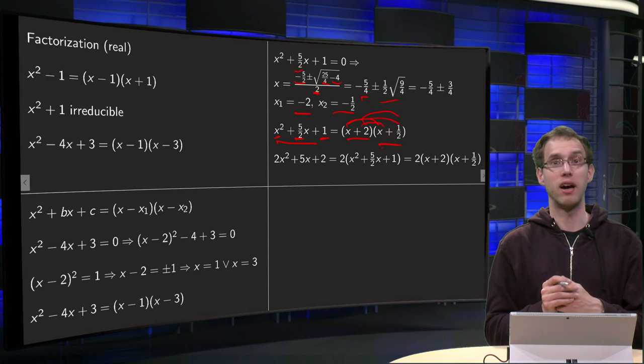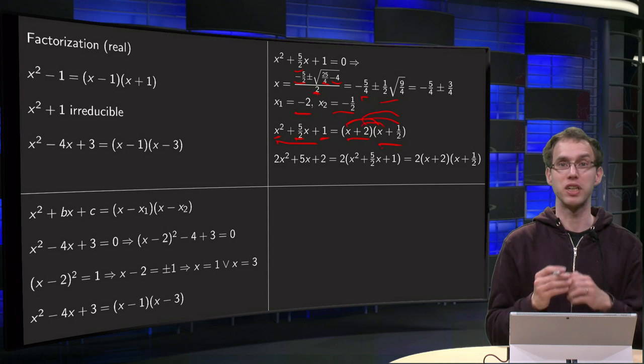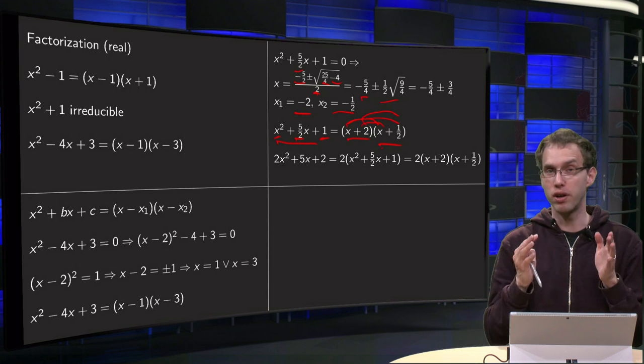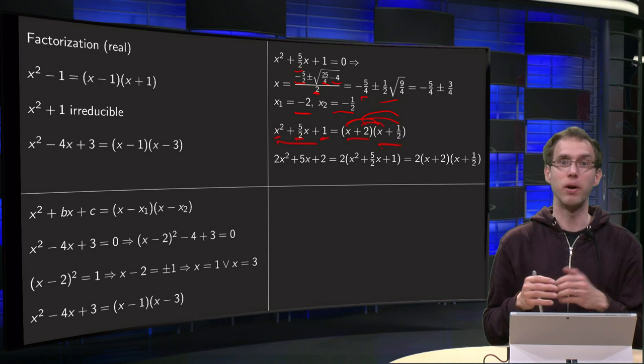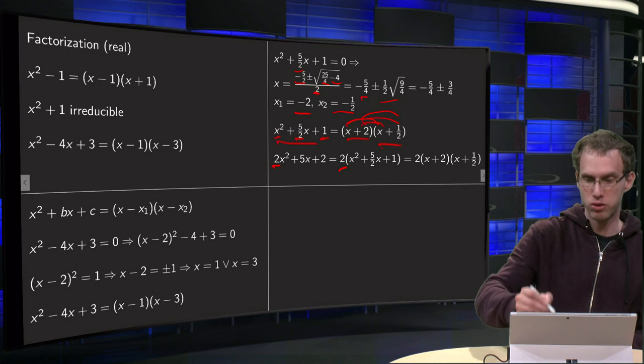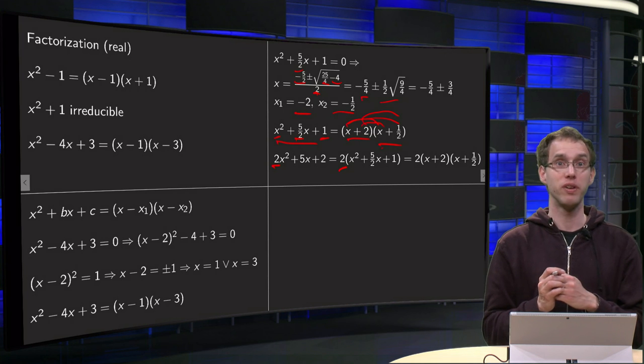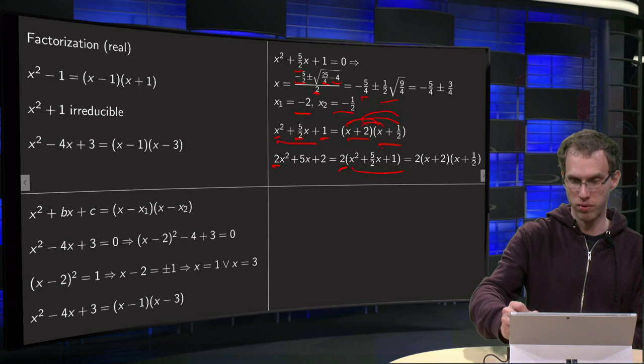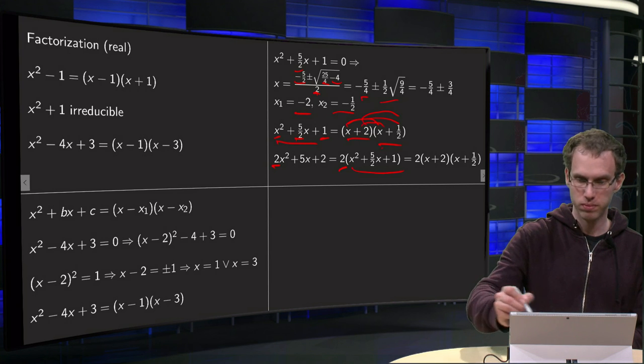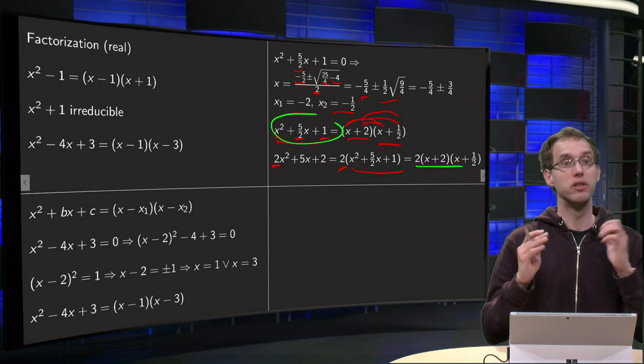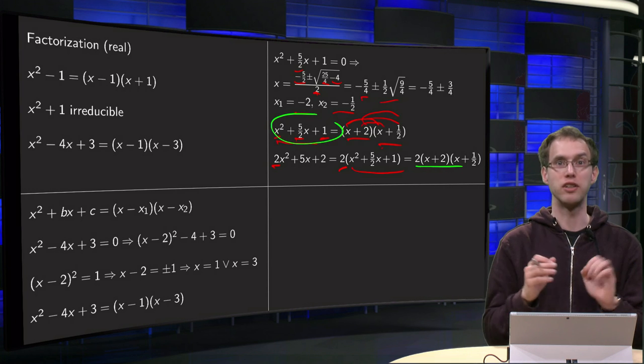So what would happen now if your term in front of the x² is not a 1? What do we do then? Because up to now we always took a 1 as our first coefficient. Well that's easy, you just factorize the factor of 2 for example here out, so we get 2 times a polynomial which has its first coefficient 1. And this is exactly the one we already did over here, so we get 2 times what we already had. So if you don't have 1 as a first coefficient, that's no problem at all.